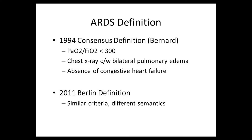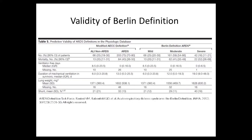Thinking about the ARDS definition — you have the original 1994 consensus definition, which some describe as a group of people who got in a room in Barcelona and agreed on criteria in the absence of congestive heart failure. It was somewhat improved in 2011 with similar criteria but different semantics. One thing the Berlin Group did that I thought was very useful was showing that mild, moderate, and severe classifications had higher mortality and fewer ventilator-free days, and also brought in some biology, showing higher lung weight and higher shunt fractions indicating worse pathophysiology.